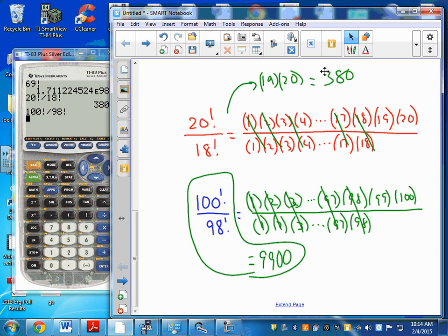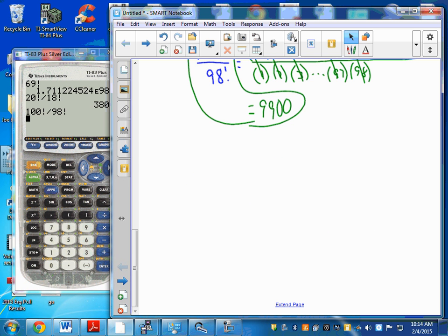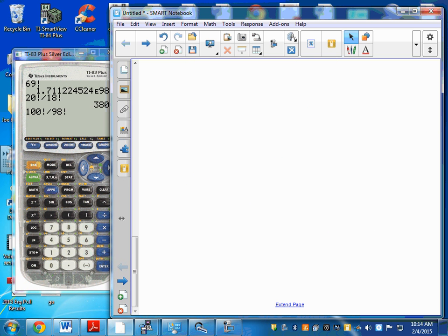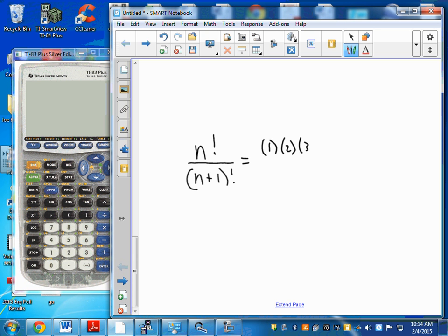Okay, so one last thing I want to do with factorials is: what happens if you had something like n! divided by (n+1)!? And you go, geez, there's no even numbers there. How do I do that? Well, n! would be 1 times 2 times 3, you keep going all the way out to n. That's n!. And (n+1)! would be 1 times 2 times 3 all the way out to n+1.